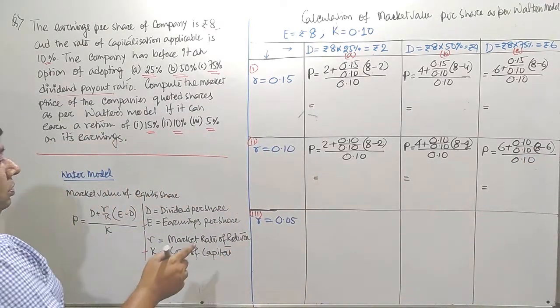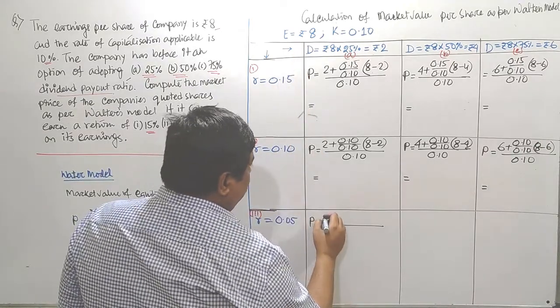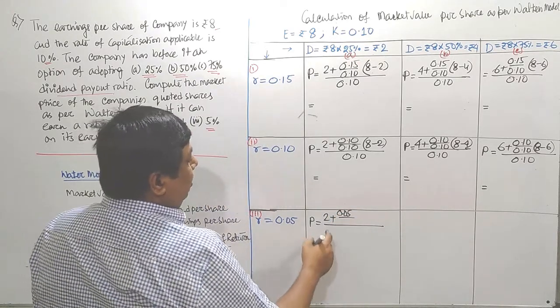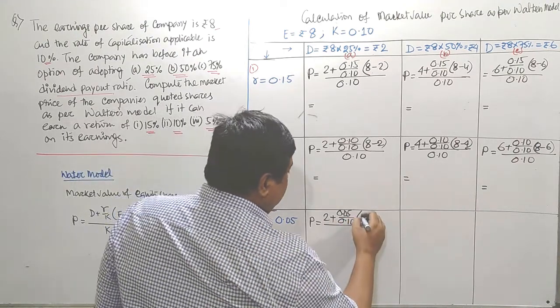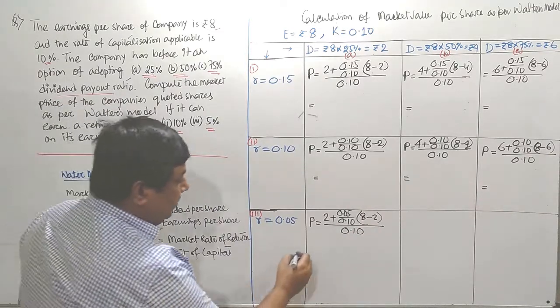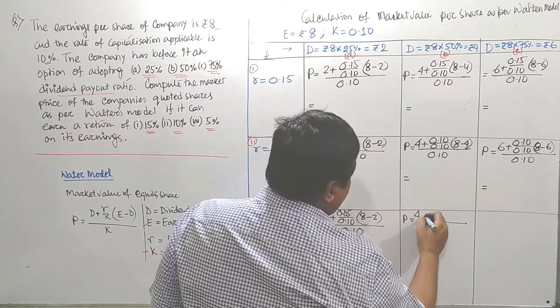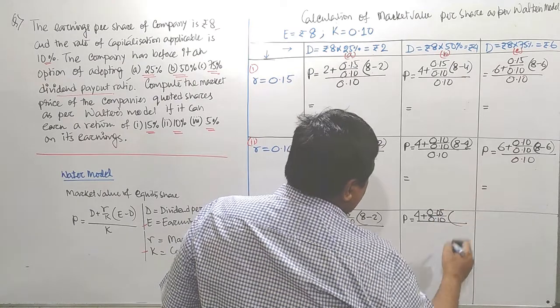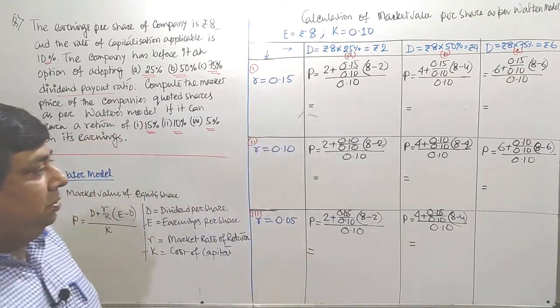It is third row, first column. Formula is known. First item will be D, D is 2, plus R by K, R is 0.05, K is fixed at 0.10 within bracket. E minus D, E is rupees 8 and D is rupees 2, all divided by K, 0.10. First column, P equals to D, D is 4, plus R by K, 0.05, K is 0.10, E minus D, 8 minus 4, all divided by K, 0.10.